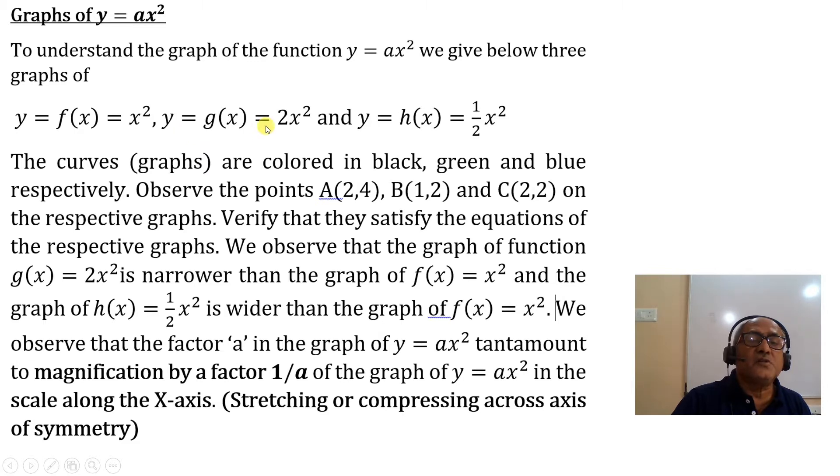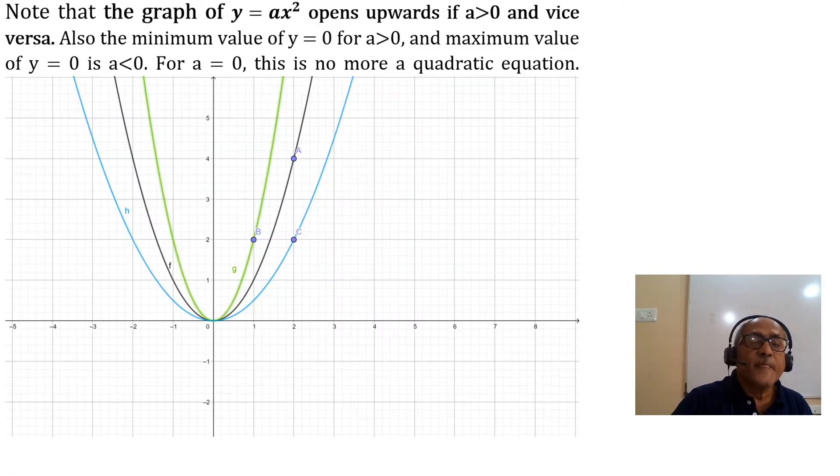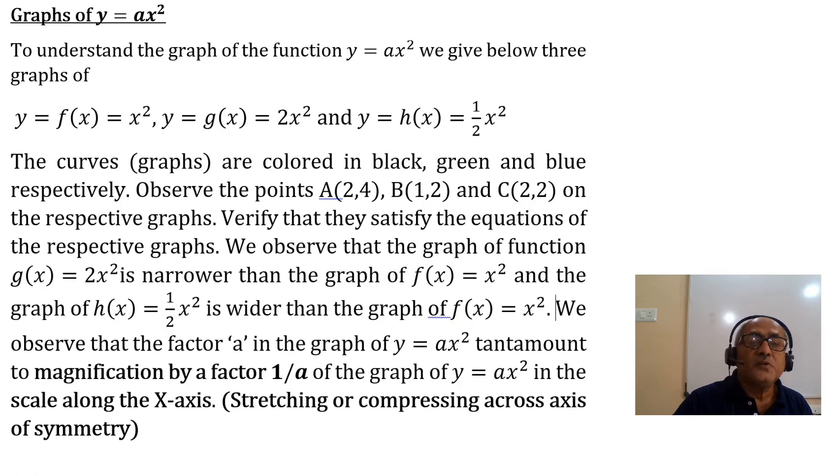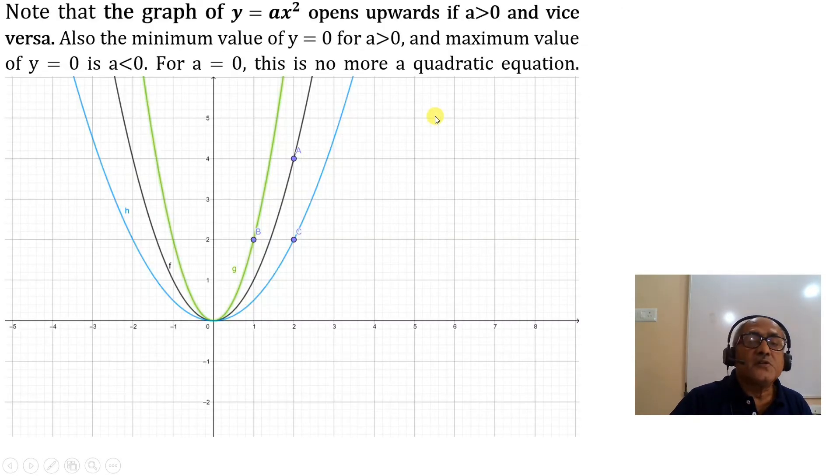Then g(x) equals 2x squared, this green one. Then h(x) is half x squared, this is the widest of all, this is the blue one.